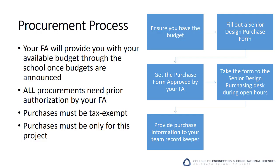Assuming you're planning to spend school-managed funds and want to start making purchases, the first step is to make sure that the team has a budget to work with. If that's in order, the second step is to fill out the Senior Design purchasing form, available on Canvas under Purchasing. Bring the completed form and any supporting documentation, like quotes, estimates, or calculations, to your FA. Your FA approves the purchase by filling out the bottom of the form, including the six-digit index code and the four-digit account number. With the signed form in hand, you can now go to the Senior Design purchasing desk during open hours to complete your purchase.